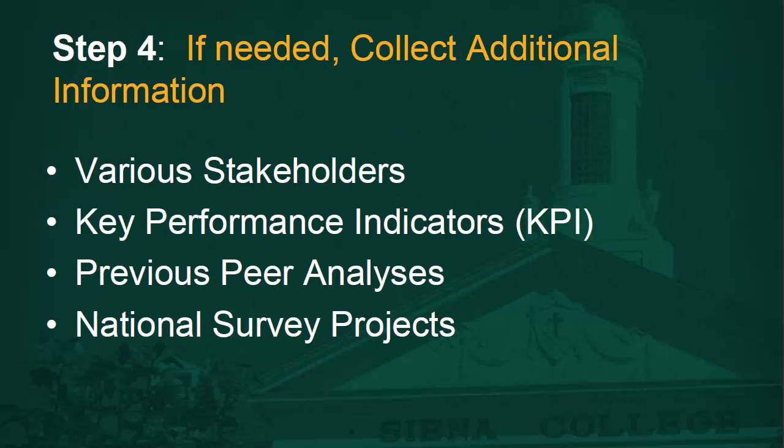In the next step, if needed, collect additional information from various stakeholders. Talk to your stakeholders who have insight into what type of attributes they would want to compare in the subgroups you've created. You can also use key performance indicators, or KPIs, that use the data elements that are important to your school. You can also go back to previously created peer analyses or national survey projects like the NSSE and the NLSSI and use data elements contained therein.